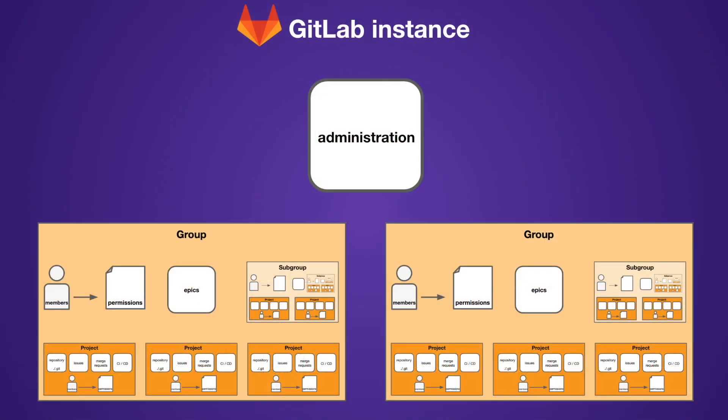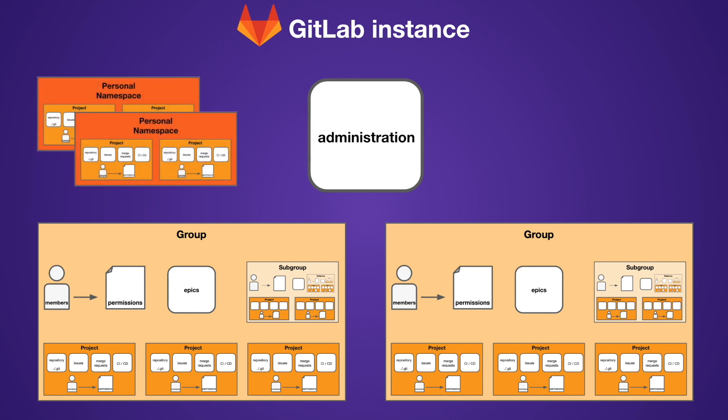Above the groups, we have the GitLab instance itself. It can contain multiple groups. It can also contain the personal namespaces of the members, which, unlike groups, have neither direct members nor group features — just personal projects. And finally, all users registered in the GitLab instance can be seen and administered here.